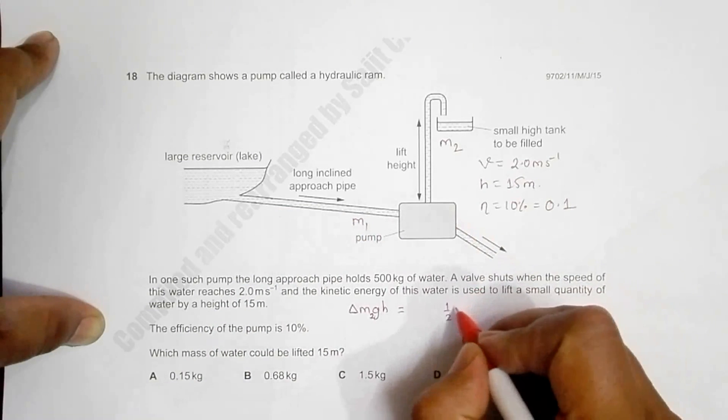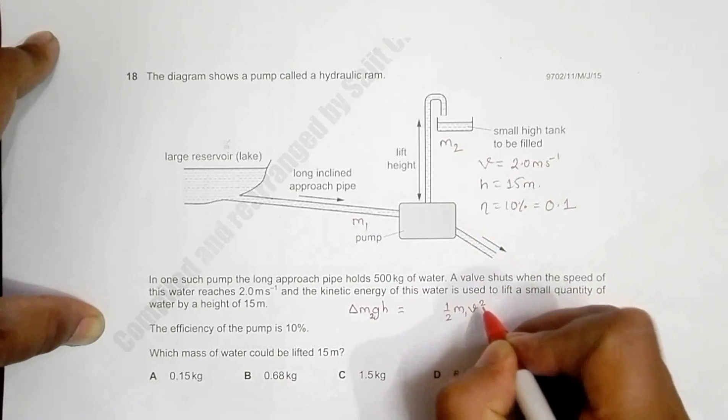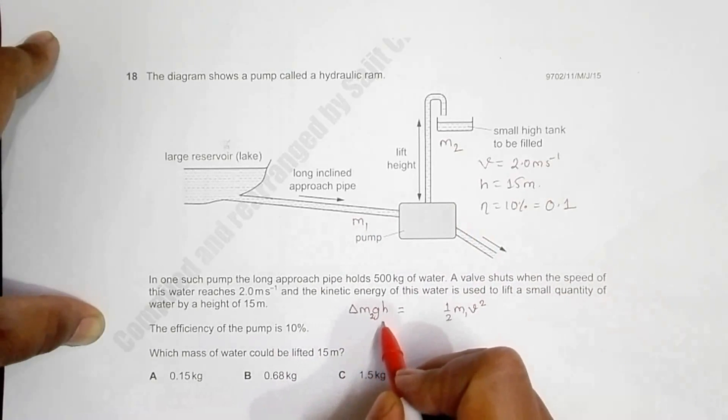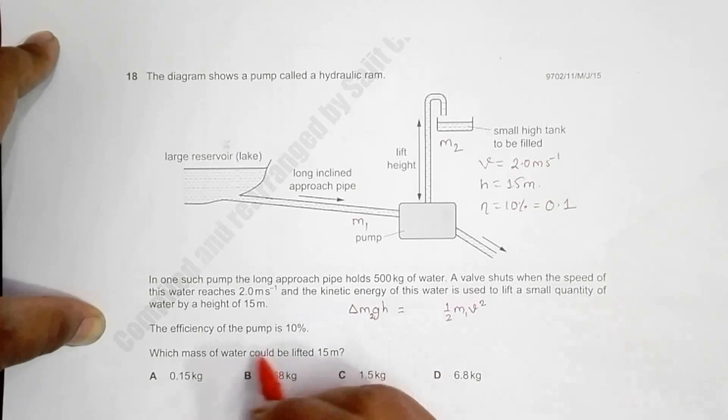Let us say it is 1/2, the mass of this water is m1, and the velocity it gains is v squared. This change in PE is because of KE of this water.